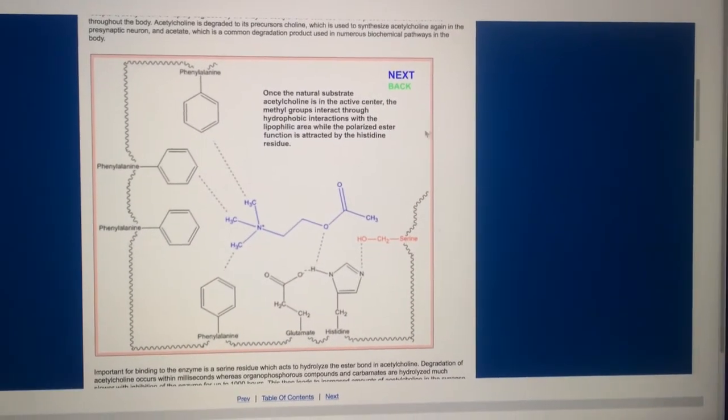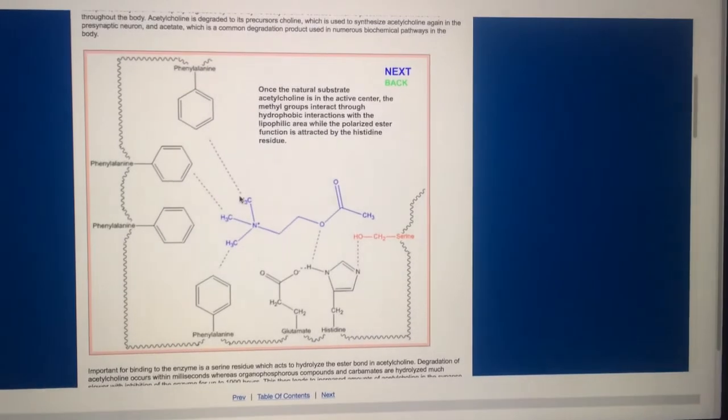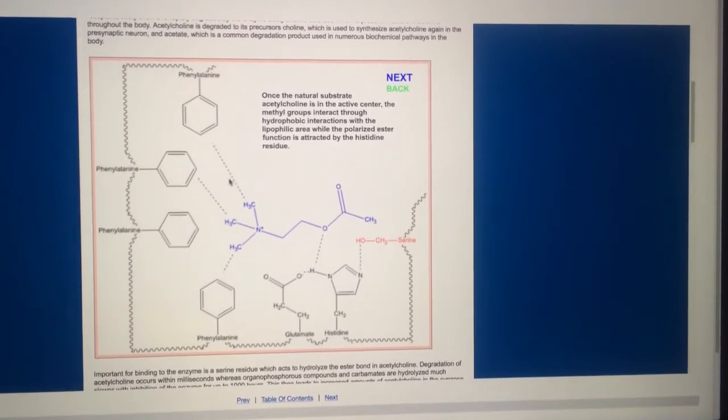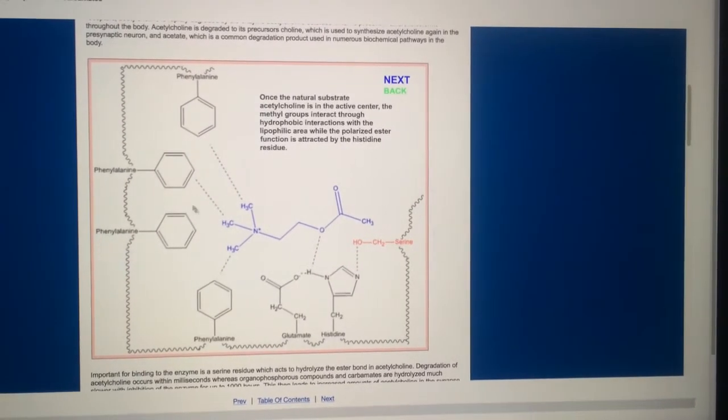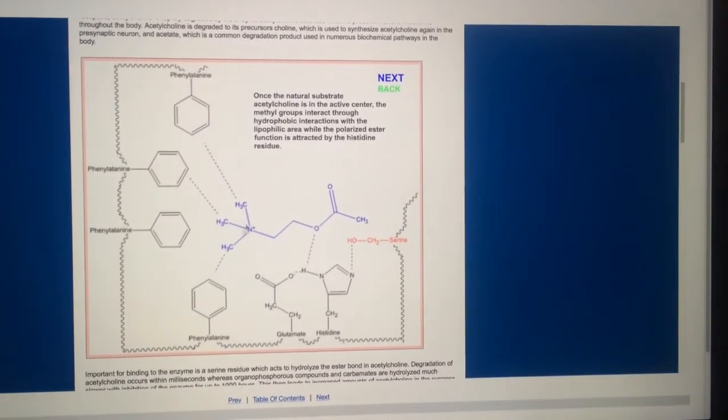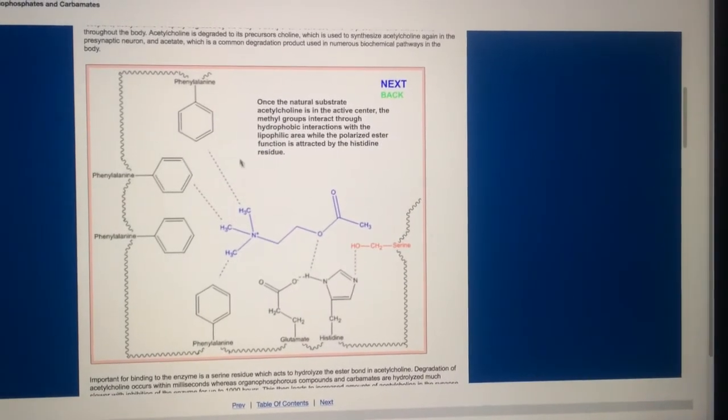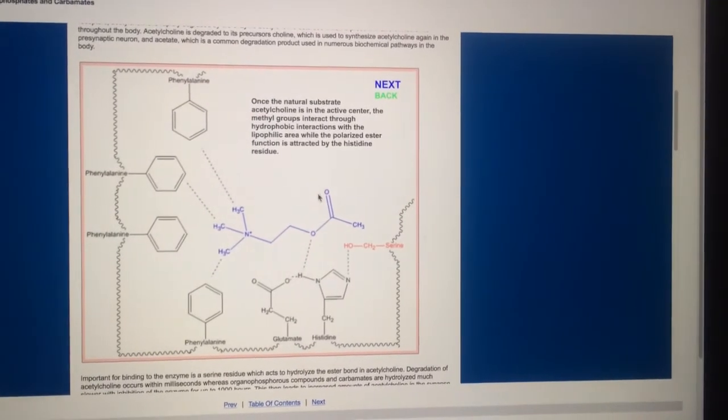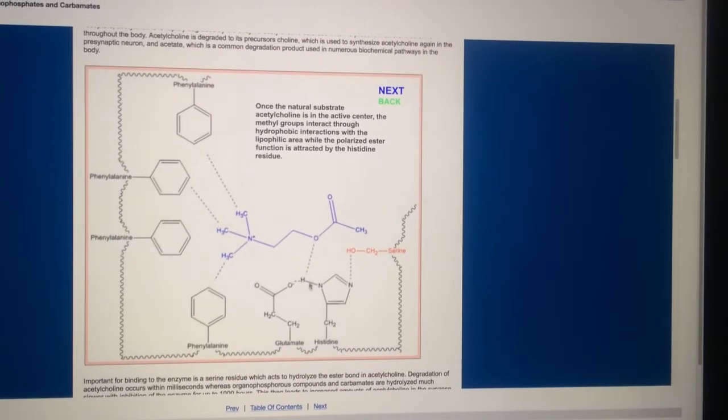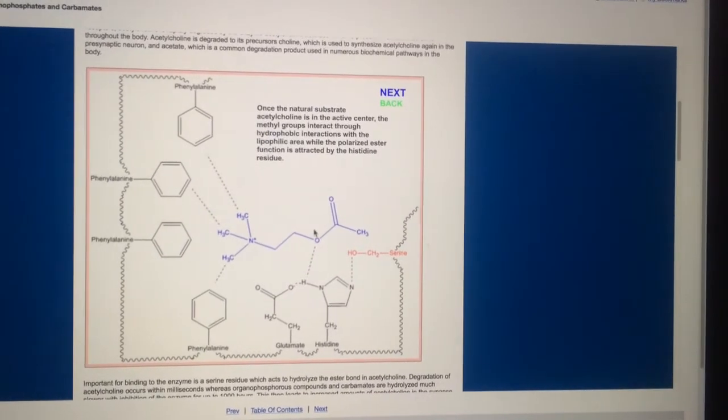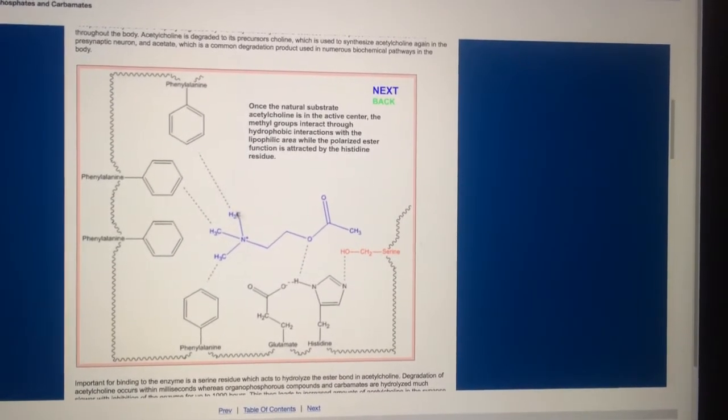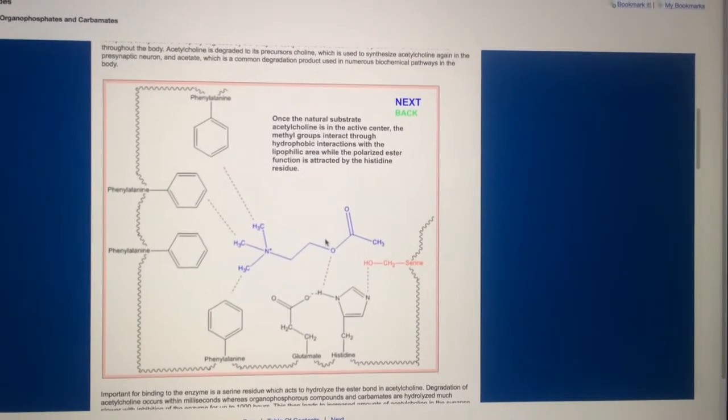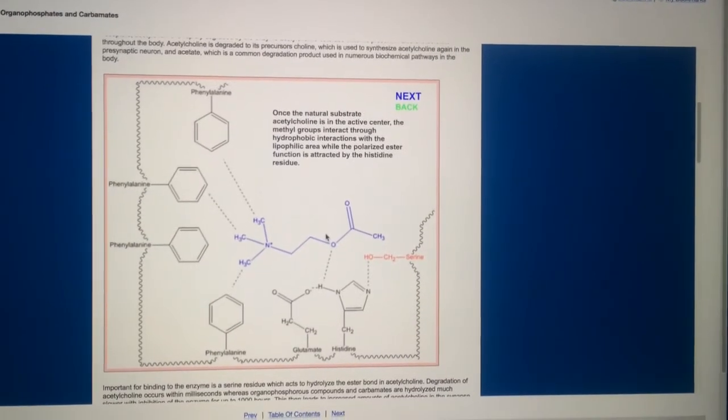So what happens is, as acetylcholine comes in, these non-polar sites here are able to interact with, go figure, these non-polar areas, these lipophilic areas, whereas this area here, the acetic acid, is attracted to the histidine residue here. And so what this does is this kind of holds the acetylcholine molecule in and allows a chemical reaction to occur.